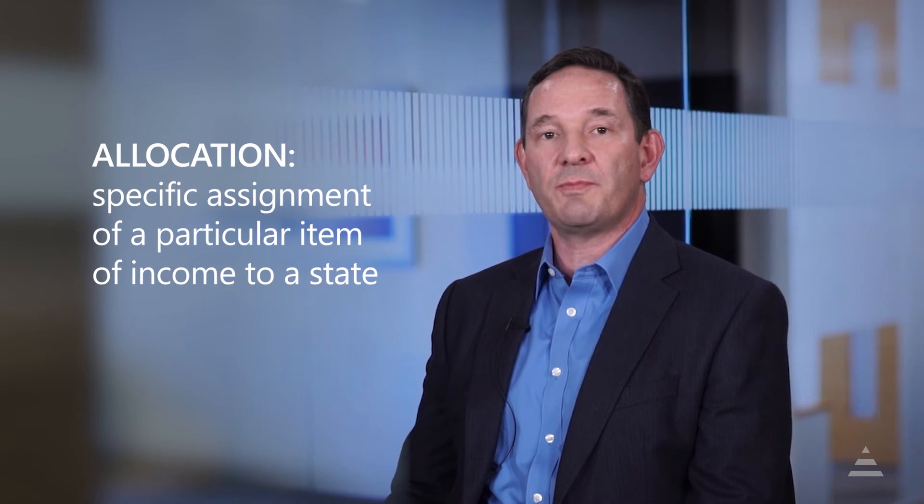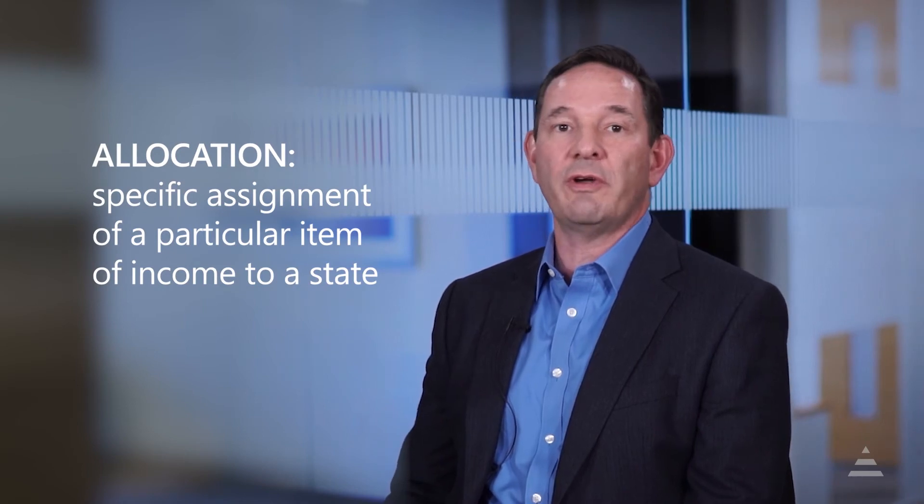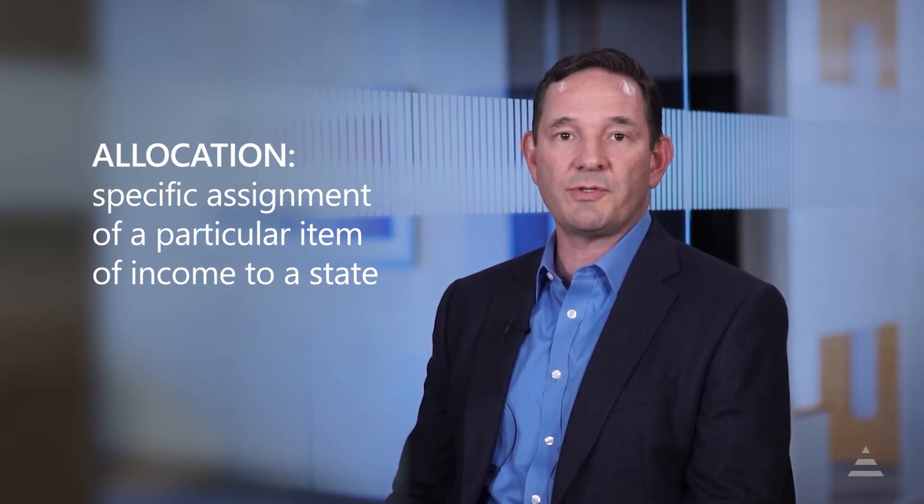Allocation is just taking specifically enumerated items and specifically sourcing them to one state or another. So things like interest, or maybe a capital gain from a sale of a piece of real estate, may get specifically sourced or allocated to a particular state. Generally, the vast majority of your income — your business income — gets split up among the states through some sort of formula, and that's what's known as apportionment.